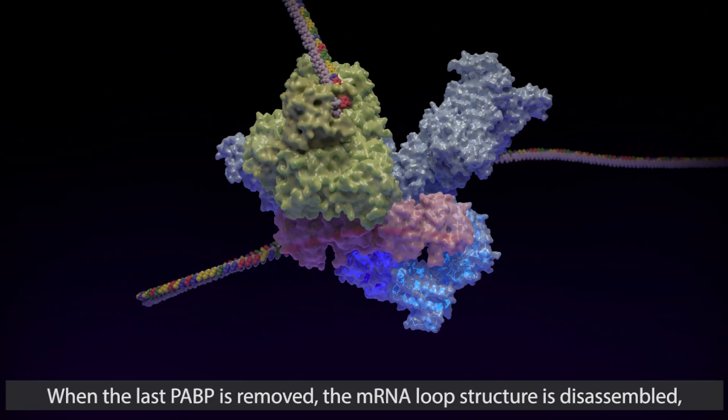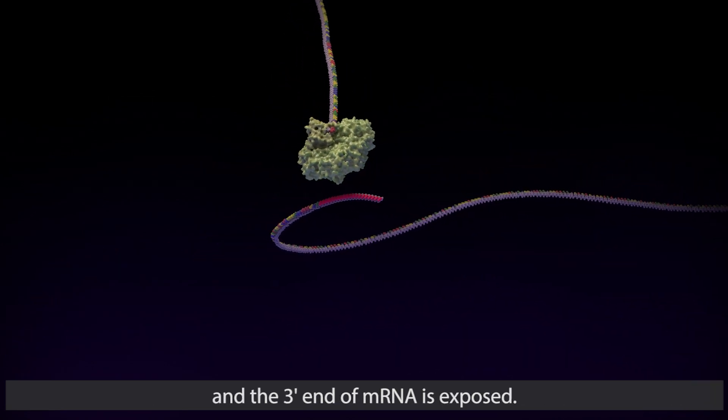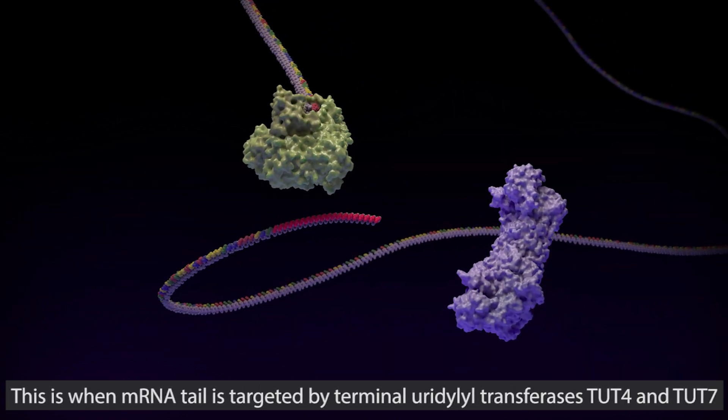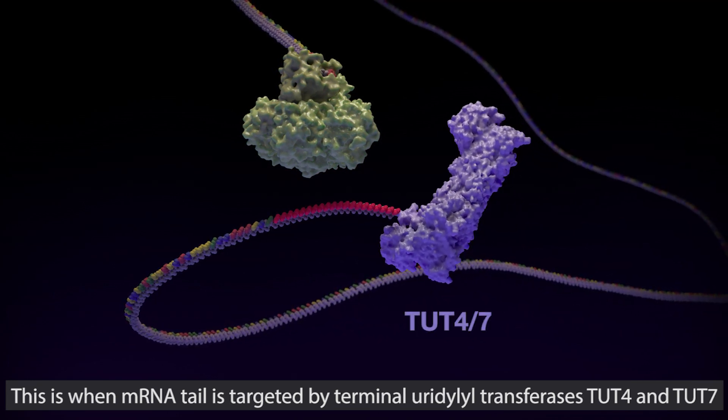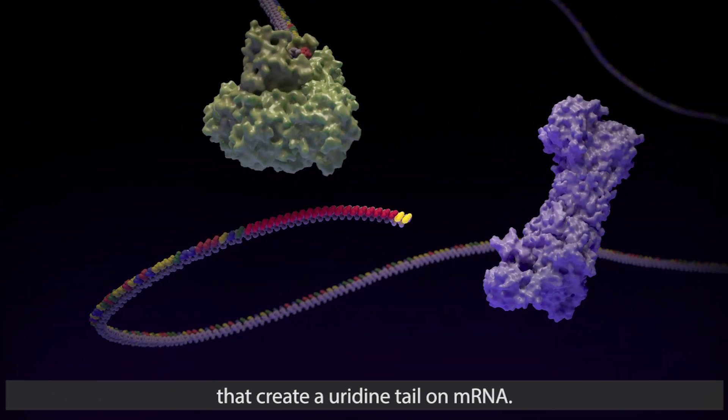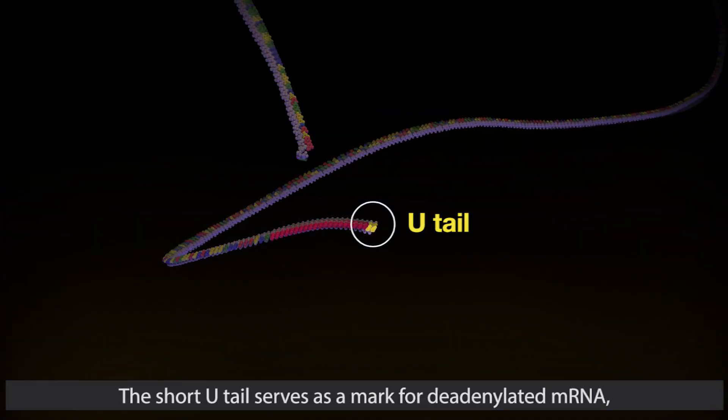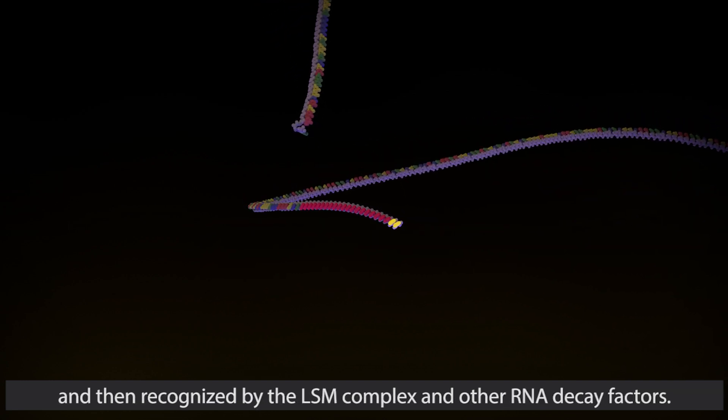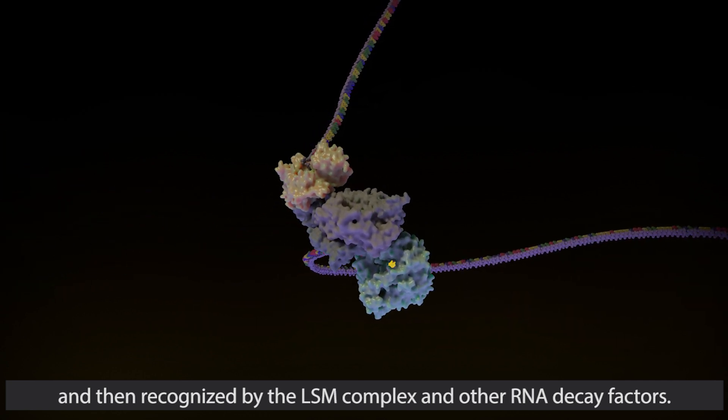When the last PABP is removed, the mRNA loop structure is disassembled, and the 3' end of mRNA is exposed. This is when mRNA tail is targeted by terminal uridine transferases, TUT4 and TUT7, that create a uridine tail on mRNA. The short U-tail serves as a mark for deadenylated mRNA, and it is recognized by the LSM complex and other RNA decay factors.